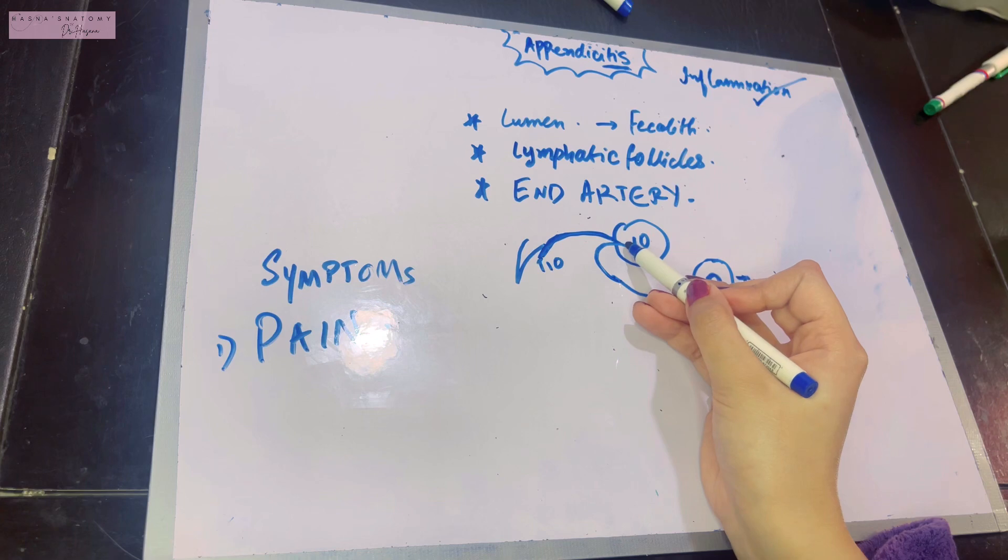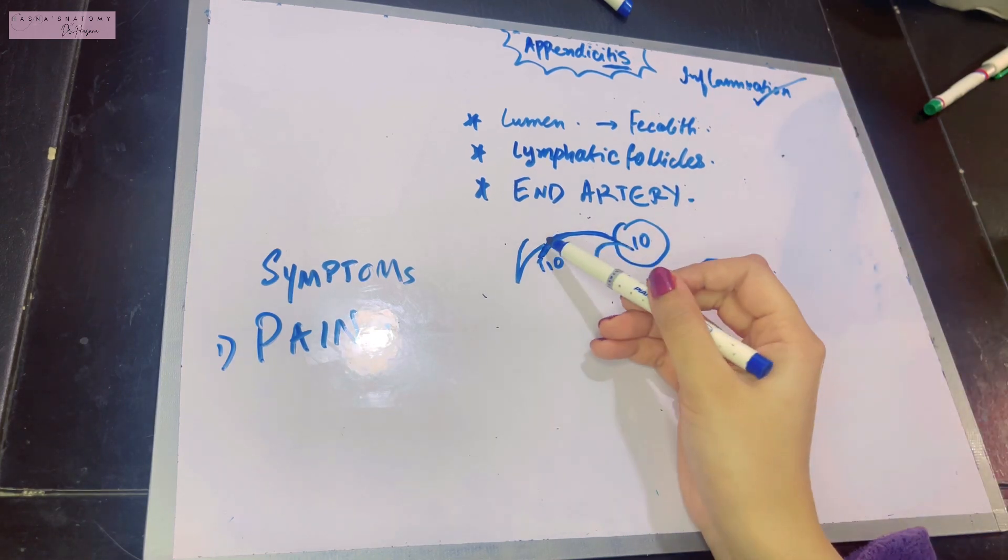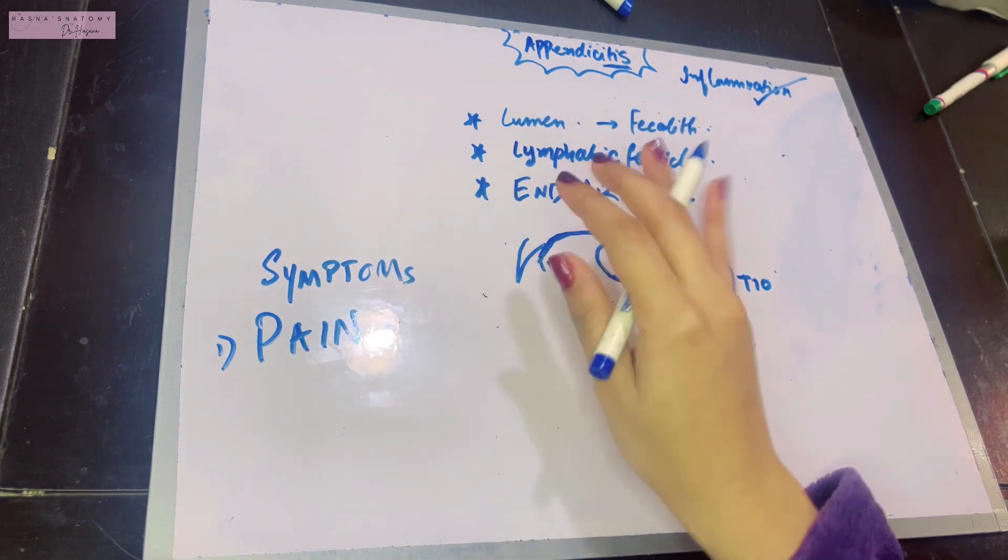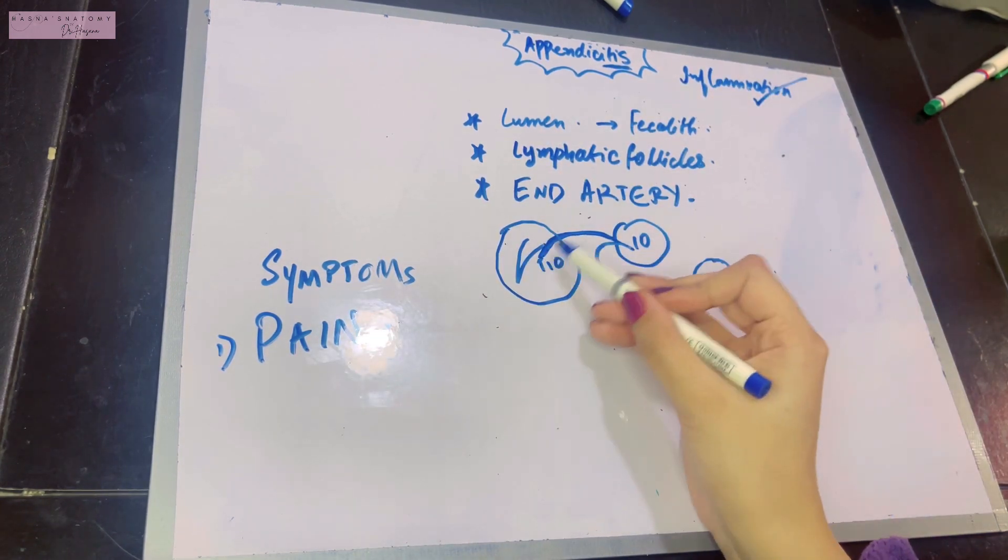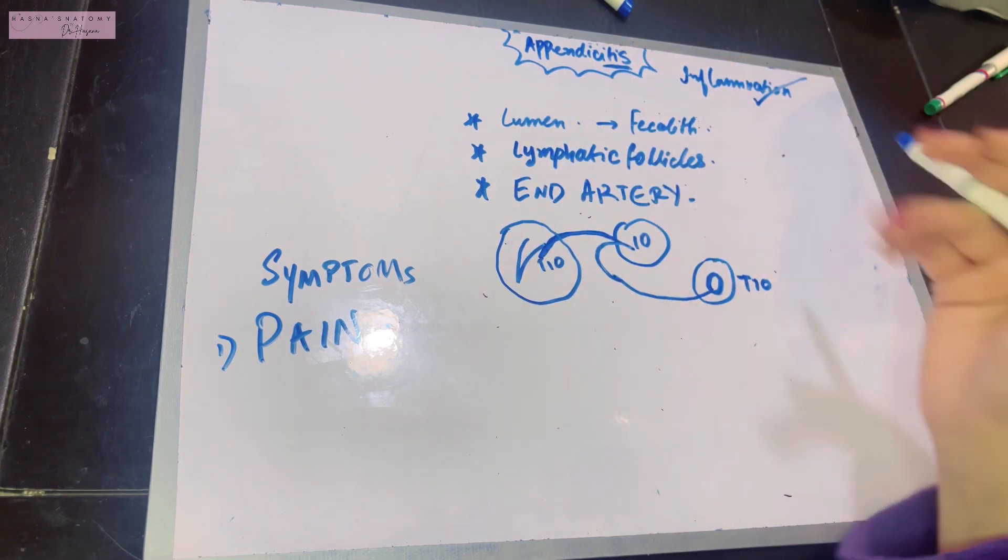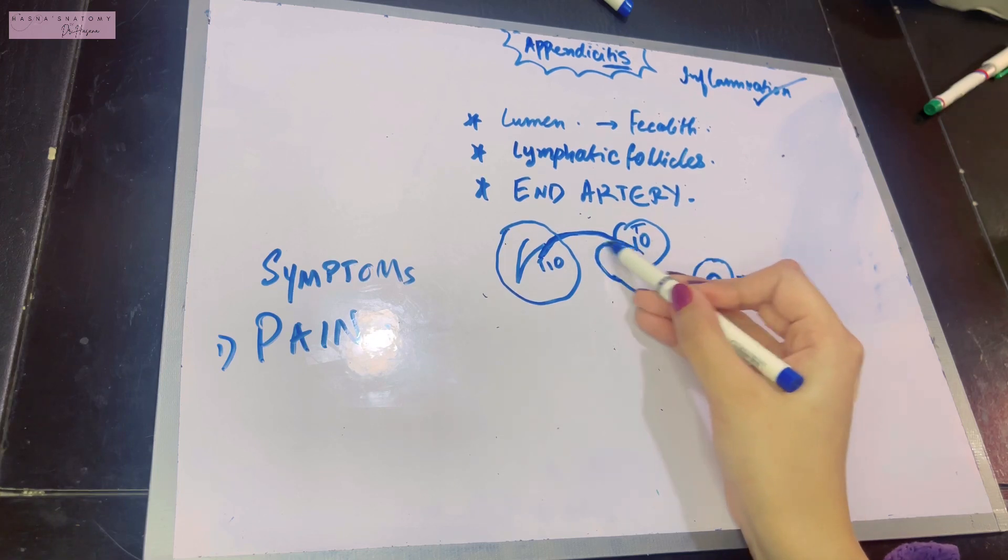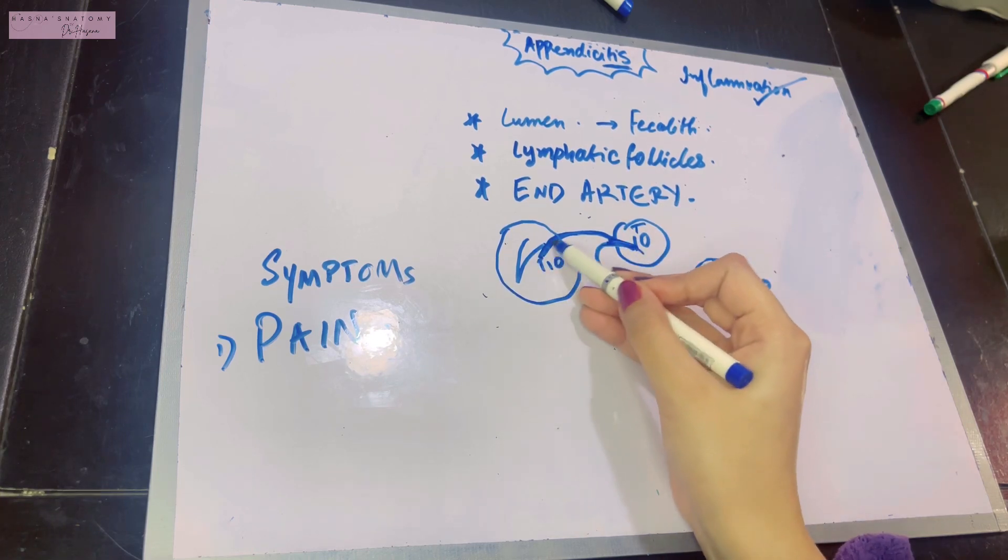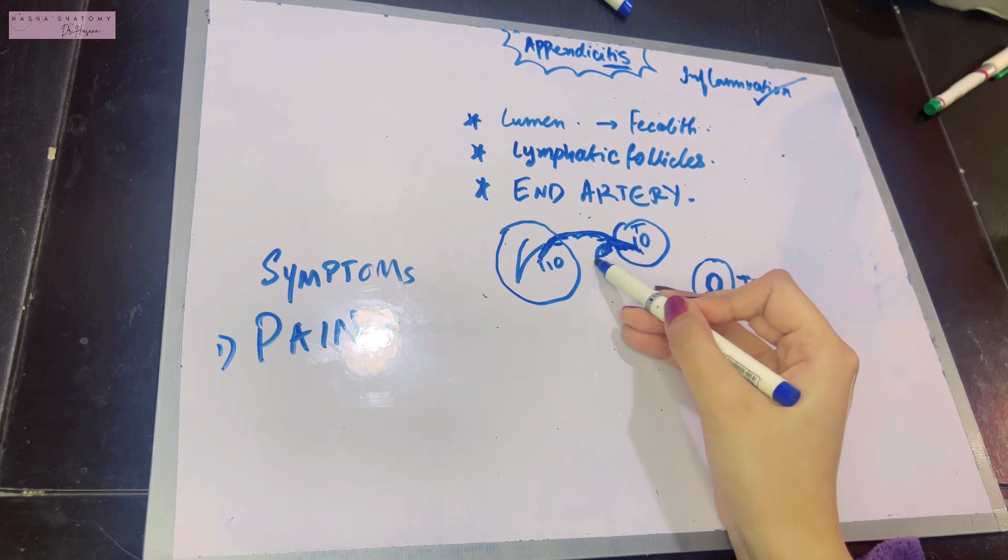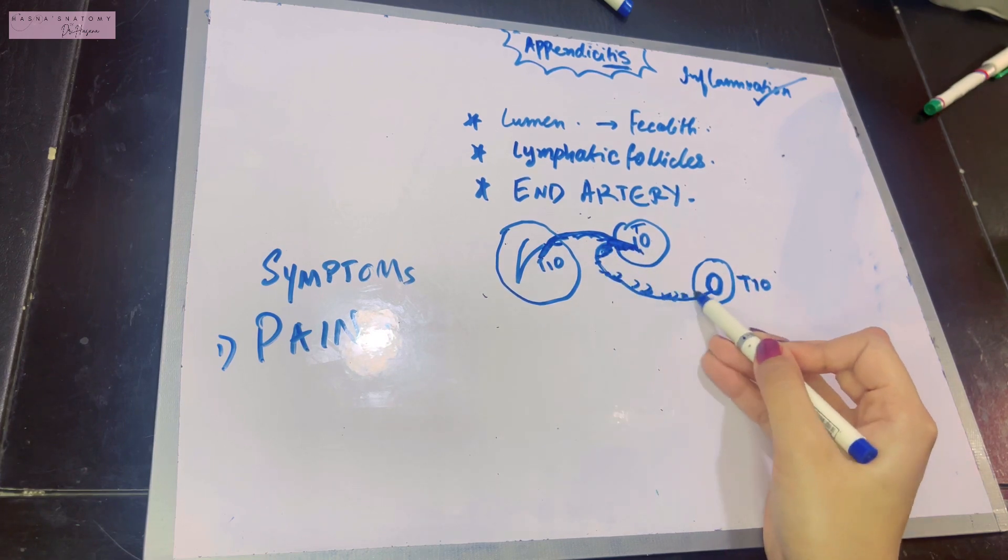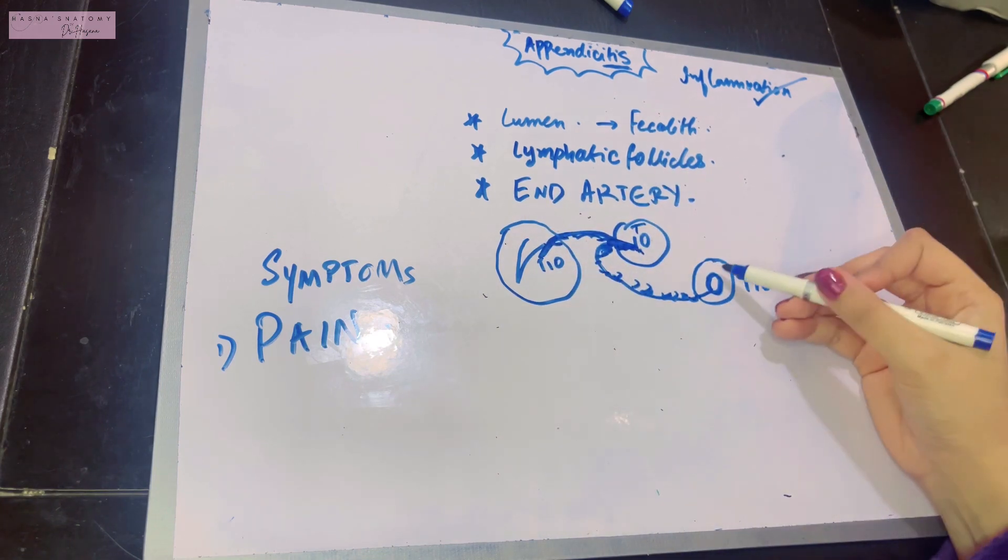If the afferent somatic fibers that carry pain from the umbilicus enter the same nerve root as the sympathetic fibers of the appendix, what do you think will happen? We know the viscera is unable to detect pain. There's one way we can feel the pain of appendicitis: if the somatic fibers are stimulated. Due to this T10 segment having the same root, if there's pain, it will be referred to the umbilicus.